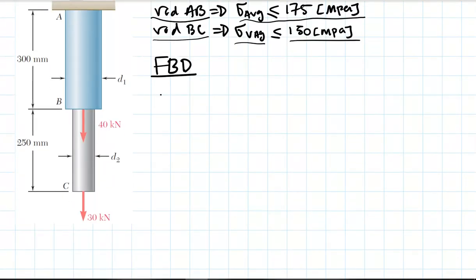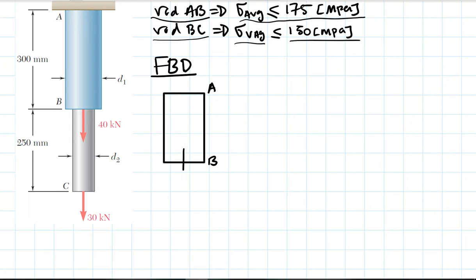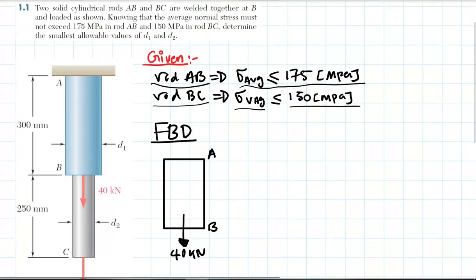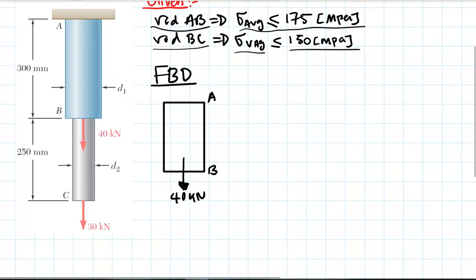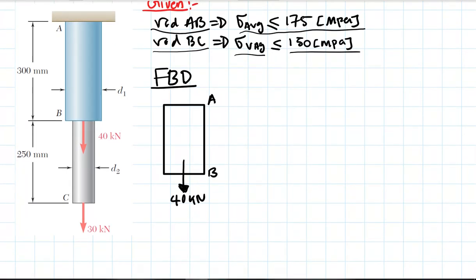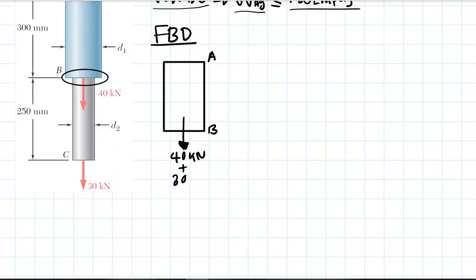Let's draw the free body diagram for rod AB. This rod is loaded with a force of 40 kilonewtons. Since the two rods are welded together at B, the load on BC also affects rod AB at point B, adding 30 kilonewtons. So the total force on rod AB is 70 kilonewtons.